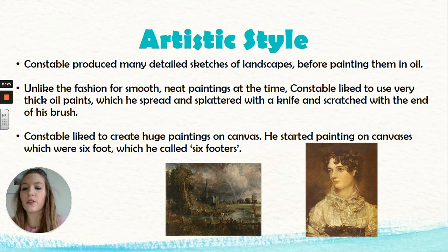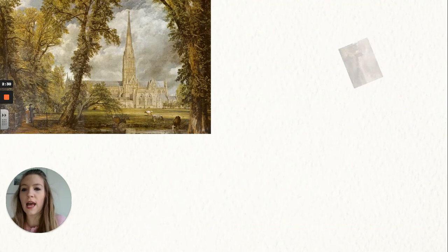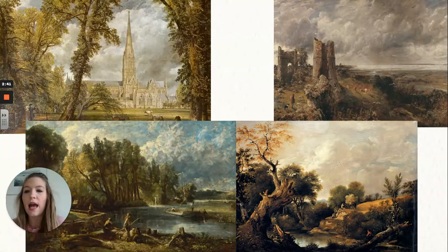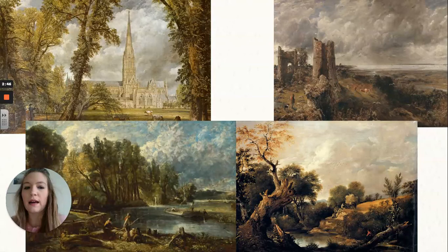Let's have a look at some more of John Constable's famous pieces of art. As you can see, lots of them are taken in the outdoors and use similar muted shades and tones. There are clouds in all of these paintings as well, which shows how his interest in cloud formations really was impacting on his artwork. I hope you enjoyed learning all about John Constable.